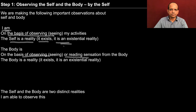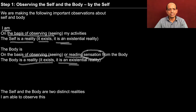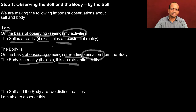Some sensation is coming from the body to the self. The body is a reality; it does exist — it is an existential reality and I come to know of it through sensation. I become aware of the body by reading the sensation, and I become aware of my being by observing my activities. You can see that the self and the body are two distinct realities. The activities in the self are completely different from the activities in the body. I do not require any sensation to know that I am there, but I do require sensation to know that the body is there, because the body is outside me.